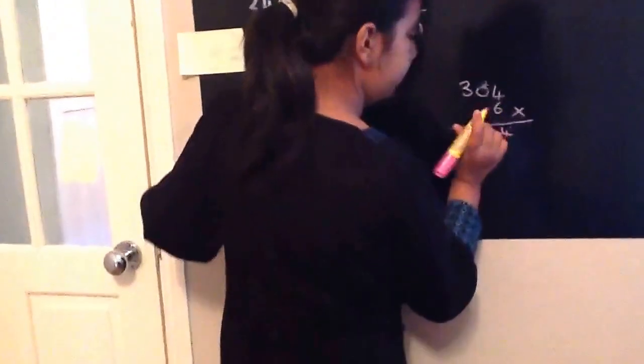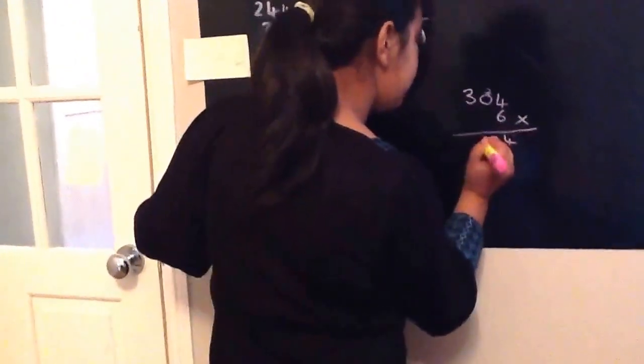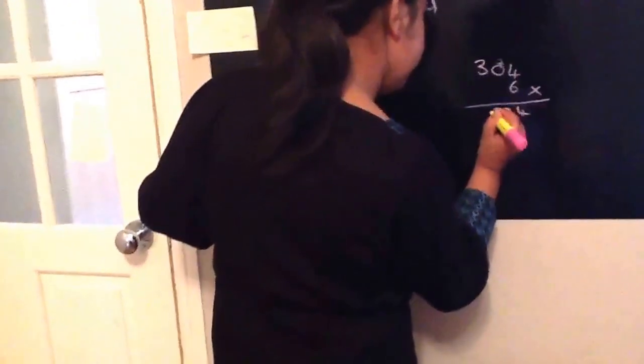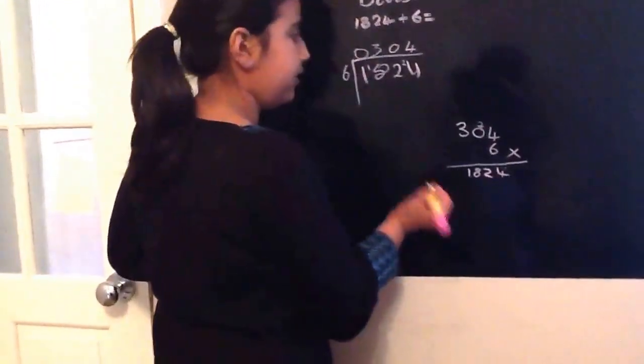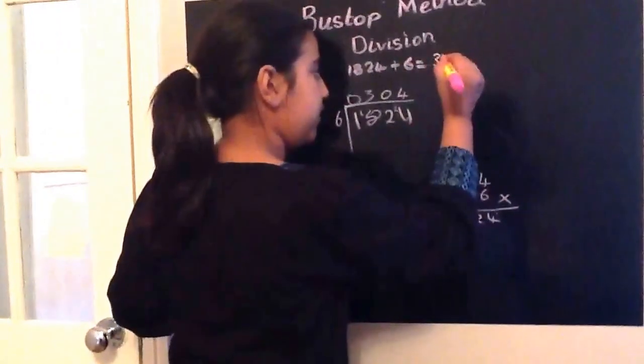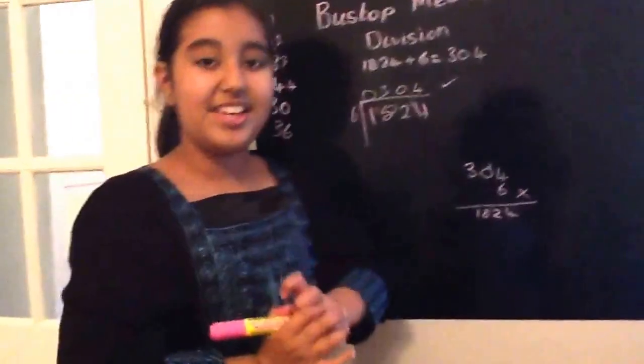Then this is, there's two, and three times six is eighteen. So this answer is correct. So the answer is three hundred and four. The answer is correct. Thank you.